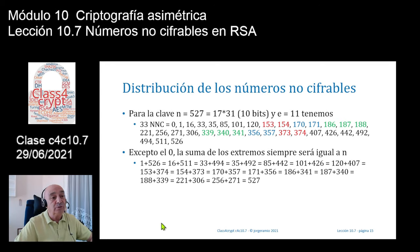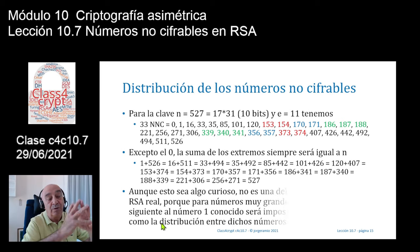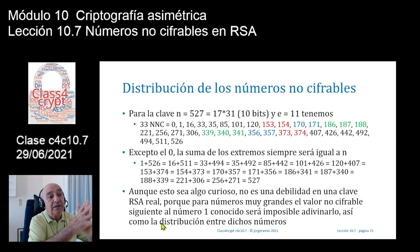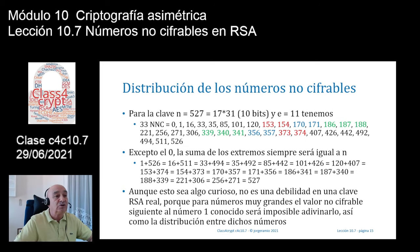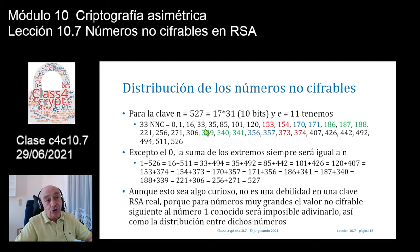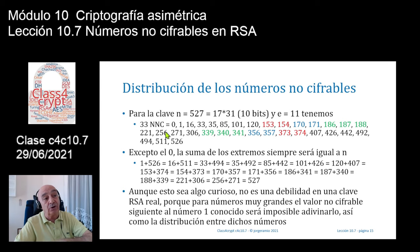Esto no es ningún tipo de debilidad, como veremos más adelante. Para números pequeños en principio podría serlo, porque yo podría, recorriendo hasta la mitad hasta el 256, obtener todo lo demás por esta ecuación de simetría. Pero vamos a ver que afortunadamente para claves reales no va a suceder.